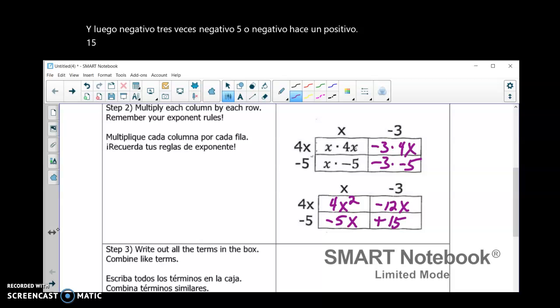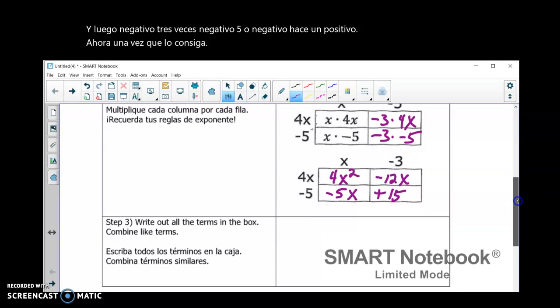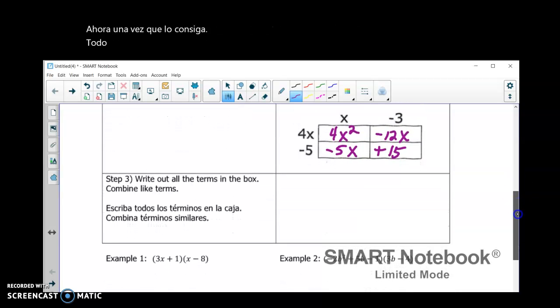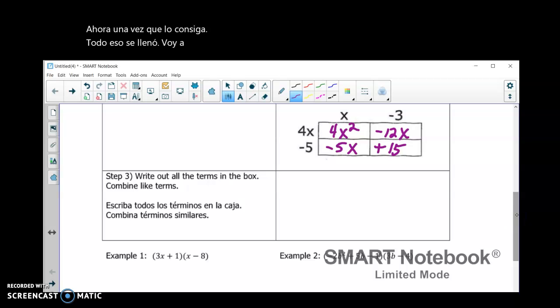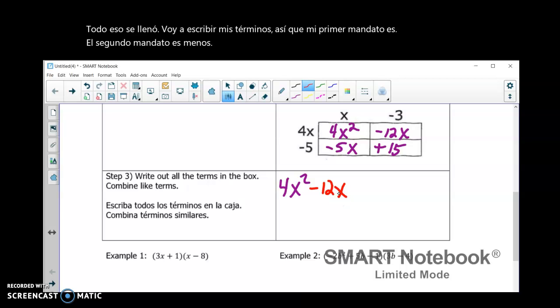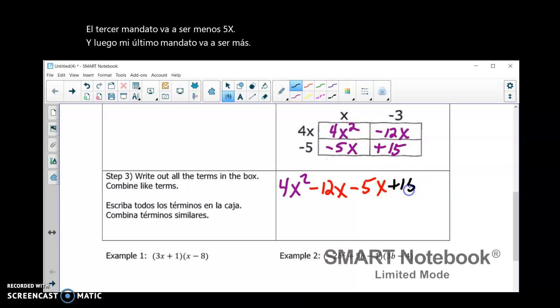Now, once I get all that filled in, I'm going to write out my terms. So, my first term is 4x squared. Second term is minus 12x. Third term is going to be minus 5x. And then my last term is going to be plus 15.